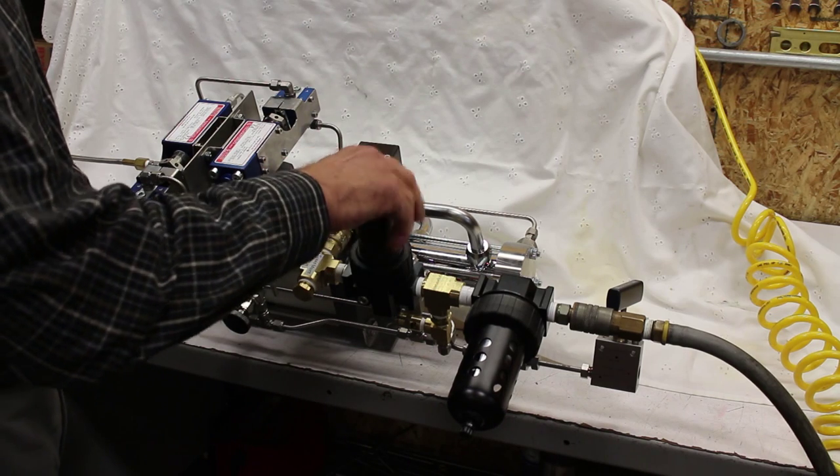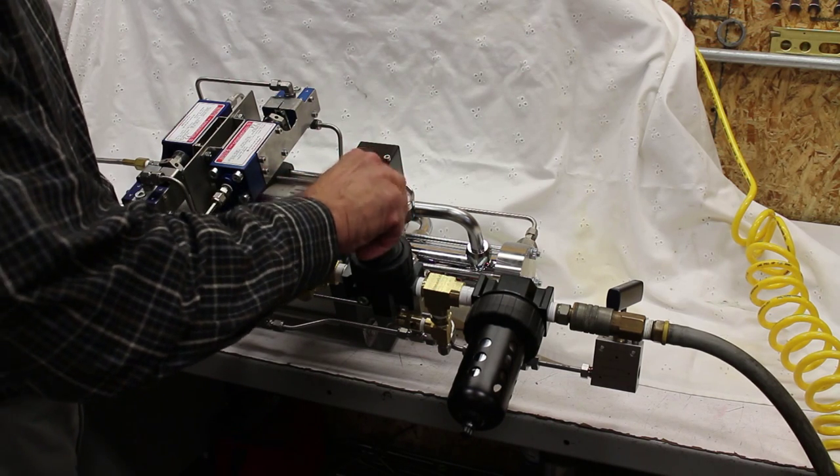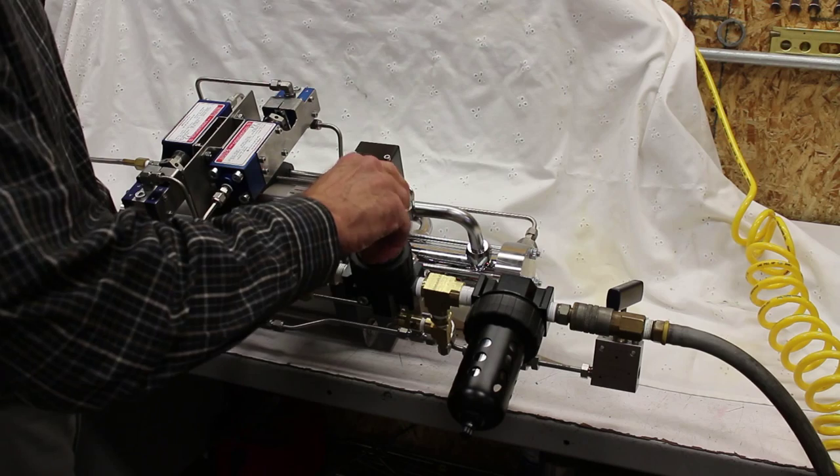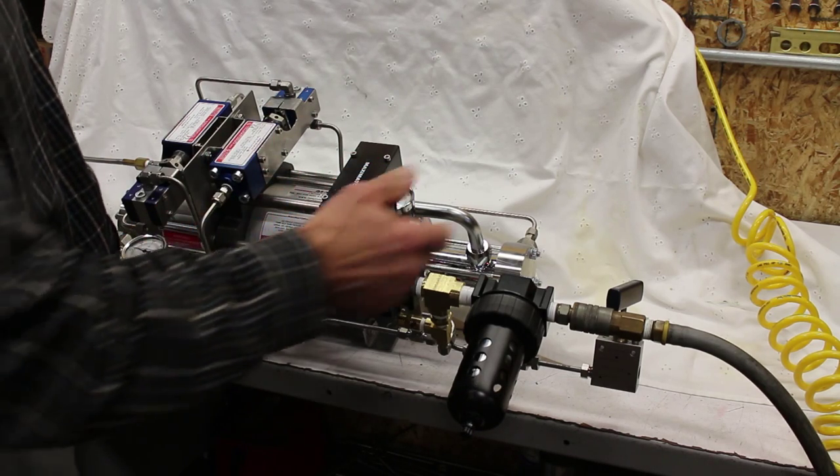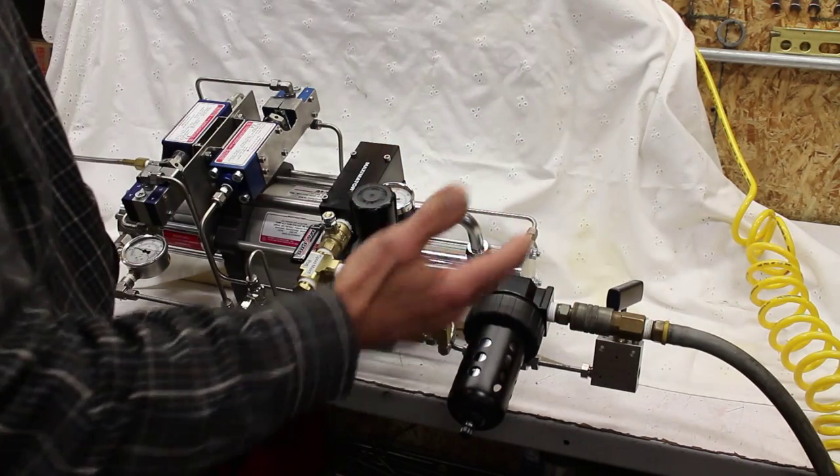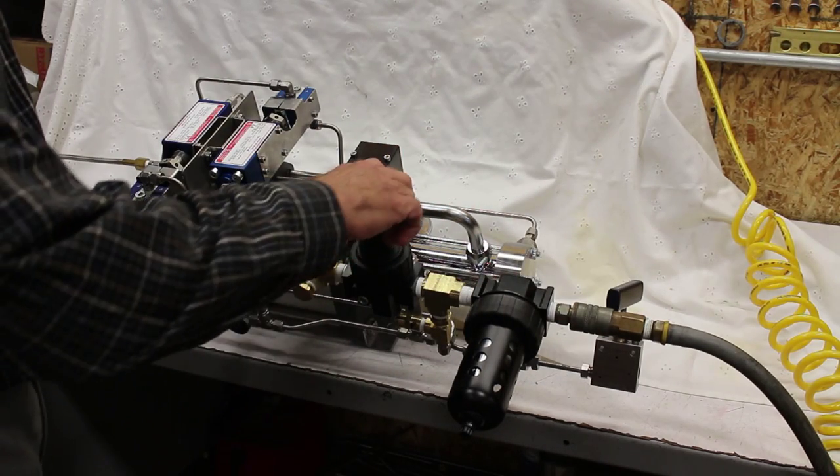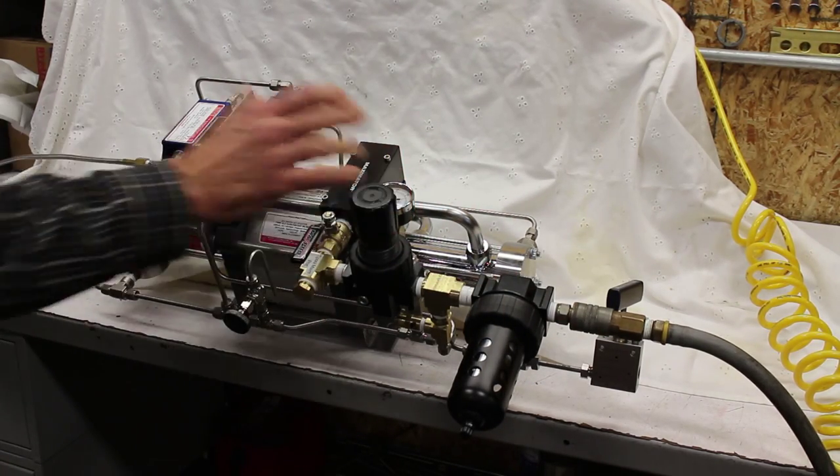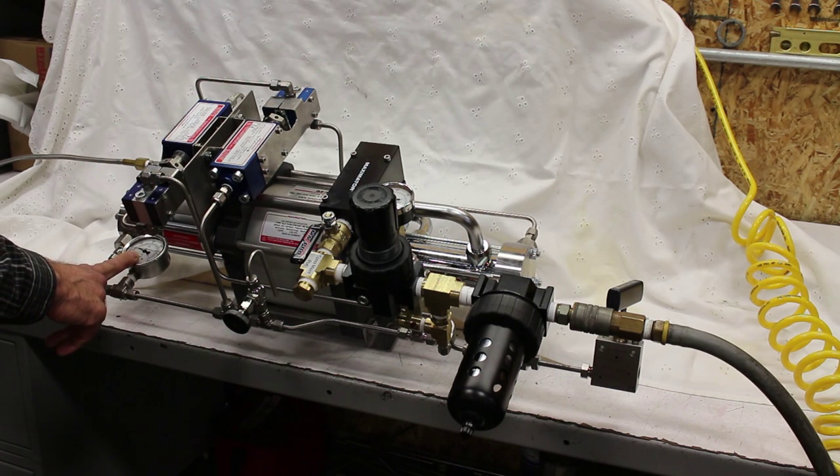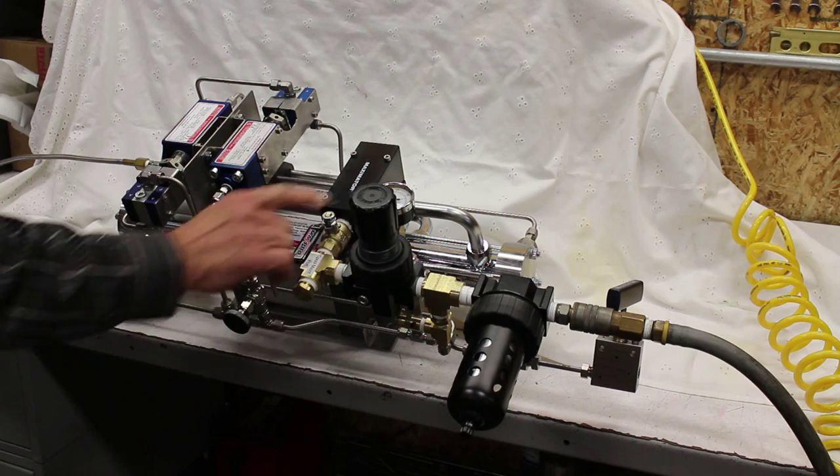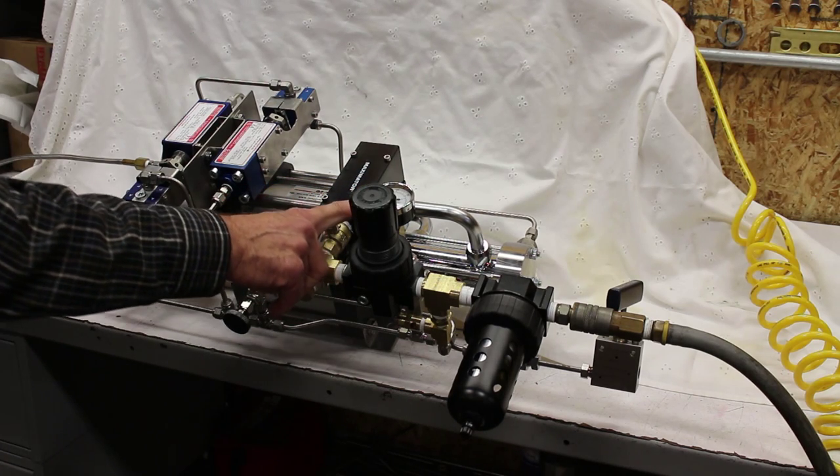So the air drive pressure times 15 will be the outlet pressure at stall. So, for example, I'll crank this air regulator in to get some air drive pressure. You've heard it take a stroke. We've got it isolated at the outlet, so there's not much volume to fill up. But as we crank down the air drive pressure, the outlet pressure will increase by a factor of 15 times your air drive plus your inlet gas pressure.